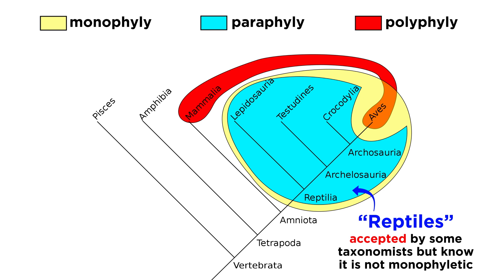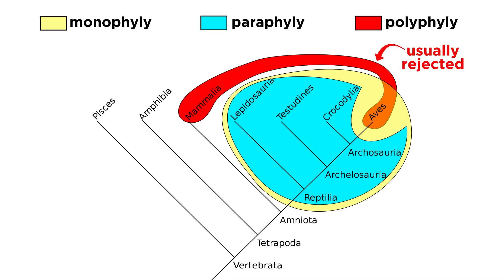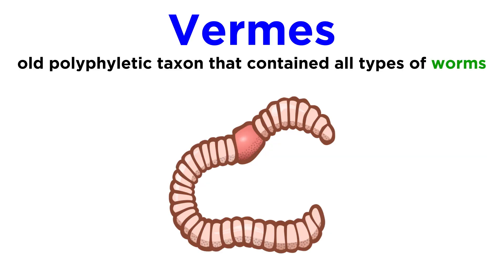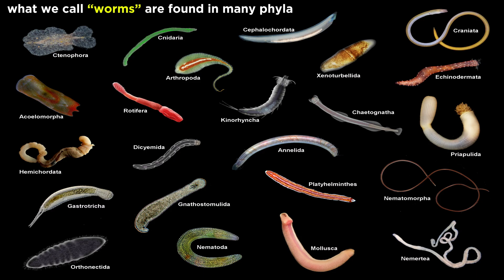Other taxonomists accept the grouping but simply recognize that it is not monophyletic. Polyphyletic groups, on the other hand, are almost always rejected. The taxon Vermes, for example, used to include all known species of worms. However, this taxon is polyphyletic, because many species of worms in cladograms do not share recent common ancestry.